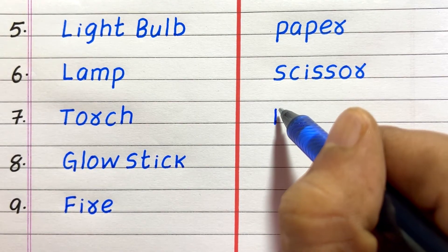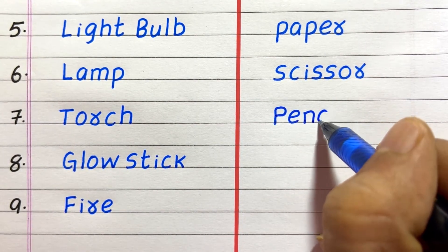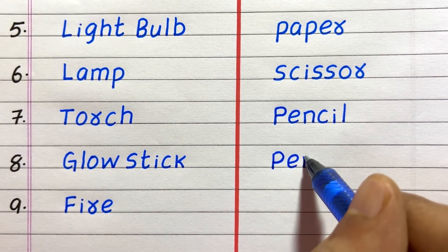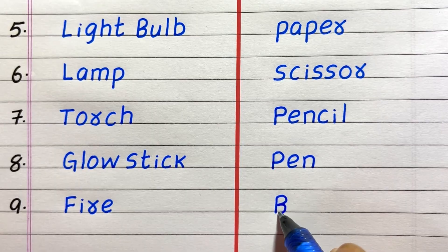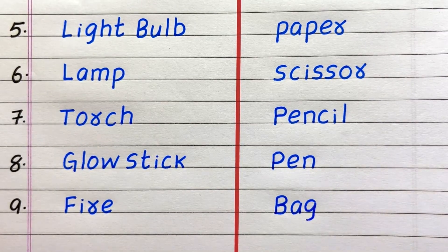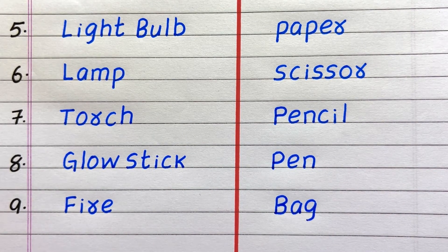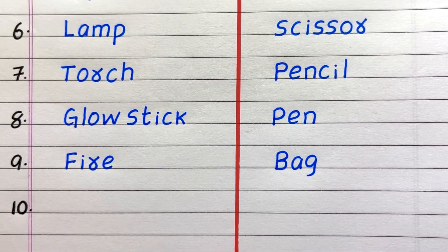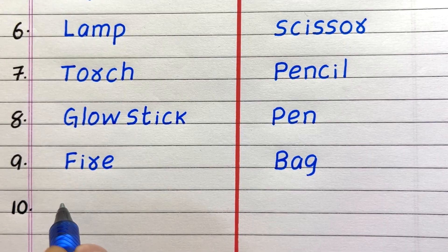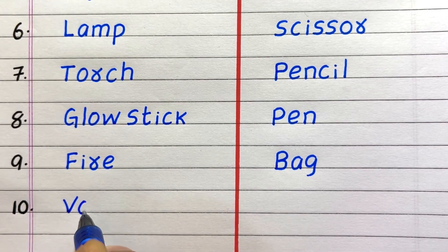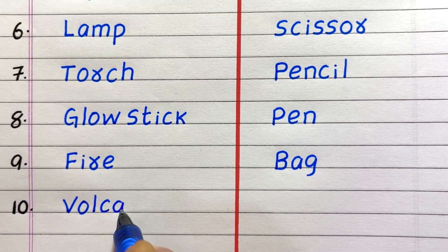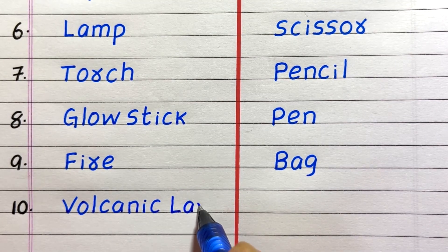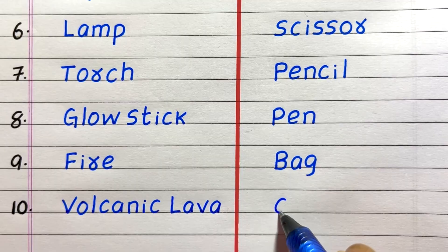Seventh example of a non-luminous object is pencil. Eighth is pen. Ninth is bag. Last one — tenth example of a luminous object is volcanic lava.